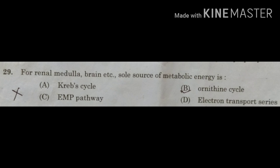Let us look at the other options. Krebs cycle: pyruvic acid formed in glycolysis enters the Krebs cycle, where each molecule is converted into carbon dioxide, water, and energy. Krebs cycle occurs in the mitochondrial matrix, whereas glycolysis or EMP pathway occurs in the cytoplasm or cytosol. Ornithine cycle is also known as the urea cycle, in which toxic ammonia is converted into less toxic urea. It is exhibited by ureotelic animals and usually occurs in the mitochondria of liver cells.